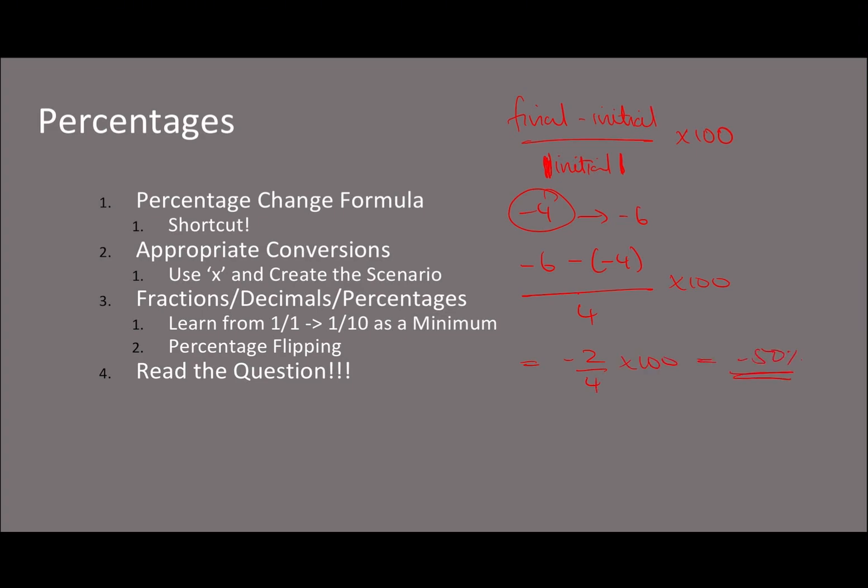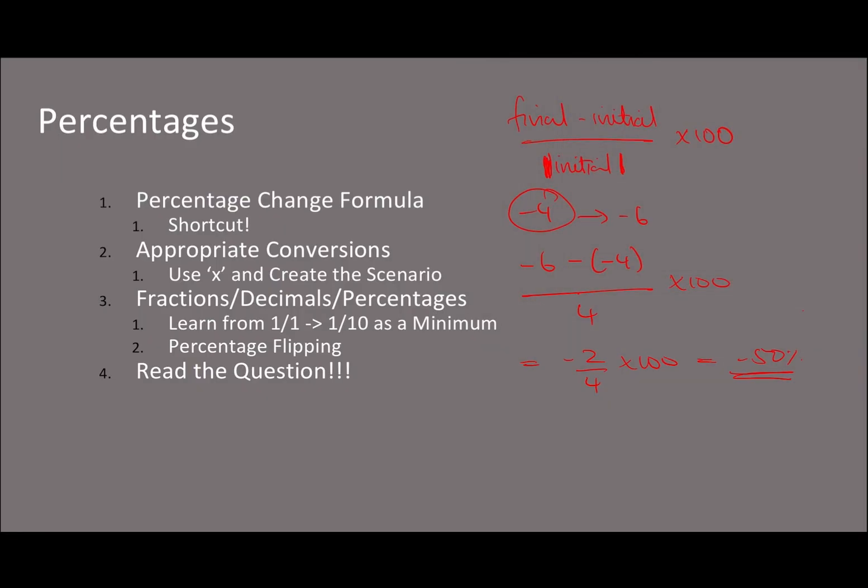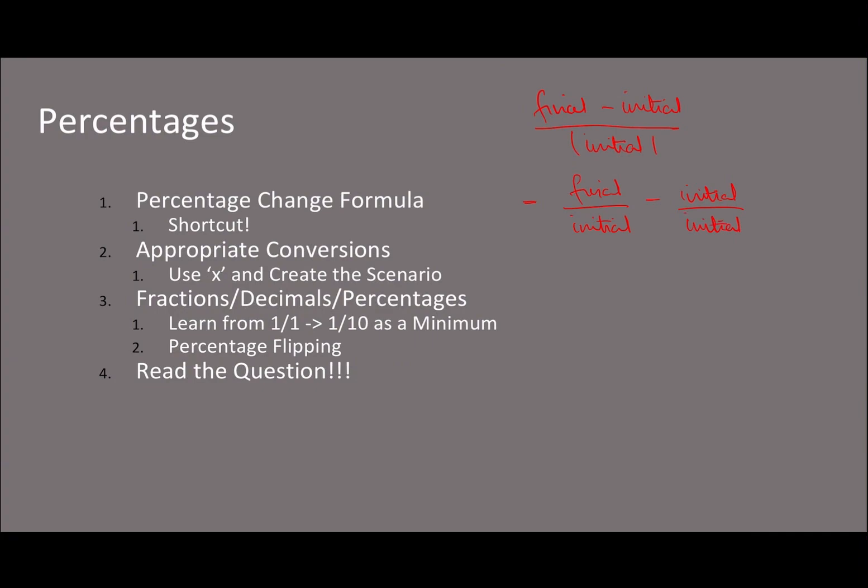So that just becomes minus 2 over 4 times 100 which is minus 50 percent. Okay, make sense. So the other version of that, this is kind of like the simple way of doing things I guess. If we look at the other version of that, if we take our exact same equation that we've got here, so final minus initial divided by the modulus of the initial, what we can do is we can split it into two separate fractions.